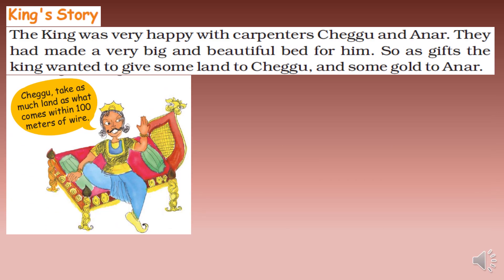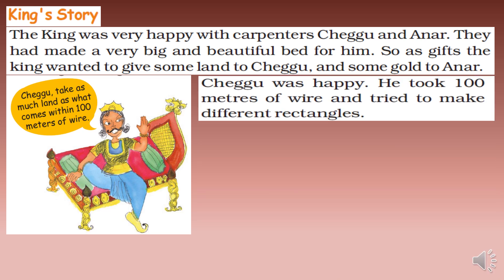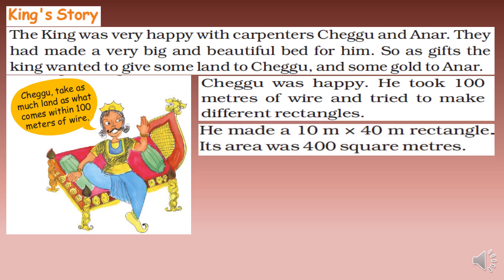King story: The king was very happy with carpenters Chegu and Anar — they had made a very big and beautiful bed for him. As a gift, the king wanted to give some land to Chegu and some gold to Anar. The king told Chegu: take as much land as comes within 100 meters of wire. Chegu was happy; he took 100 meters of wire and tried to make different rectangles.